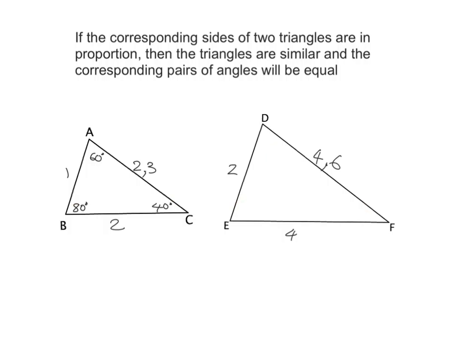One thing I like to do in geometry is to use color because it helps identify corresponding sides — the sides that are in the same position in each triangle. So the shortest side of this triangle corresponds to the shortest side in the other triangle. I'll color that red, then color the next corresponding pair blue, and then use green for the last pair. I think it's very useful in geometry to always have some colored pencils around so you can do that.